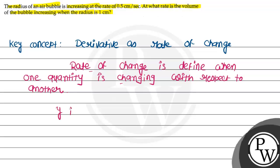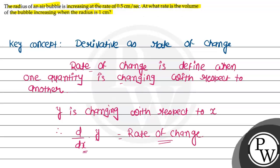For example, y is changing with respect to x. So we can write dy/dx, which means the rate of change. According to the definition, this is the rate of change. To find the rate of change, we need to differentiate the function.